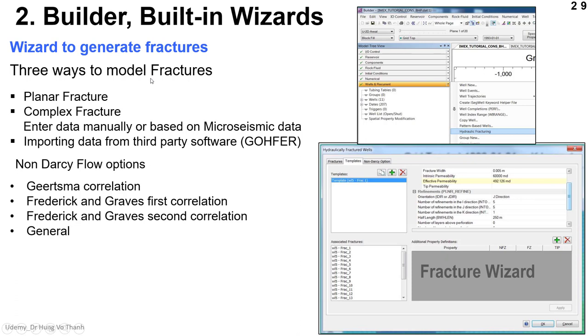Besides that, in the Well and Recurrent, we have the built-in wizards. When you would like to consider fractures, this function is very useful for you. You can decide the planar fracture, the complex fracture for your reservoir model. This option can help you to model the fracture process. You can import or enter the data manually based on microseismic data as well. Usually, this kind of information, you can use the third party software, GOHFER, which is very popular for fracture and microseismic data as well. Also, you can consider the non-Darcy options, such as the Forchheimer and Graves first correlation. This kind of formation you can perform in the built-in wizard. About the hydraulic fractured well, I will try to introduce for you when we go with the hands-on exercise module in the final session of my course.